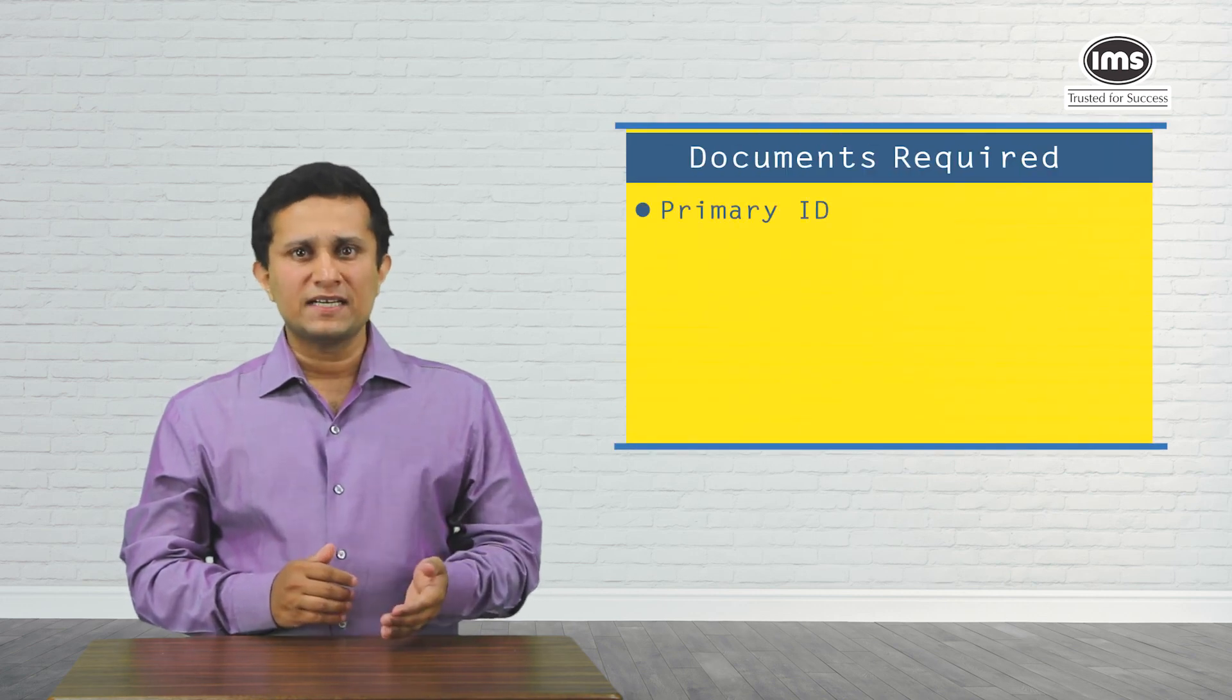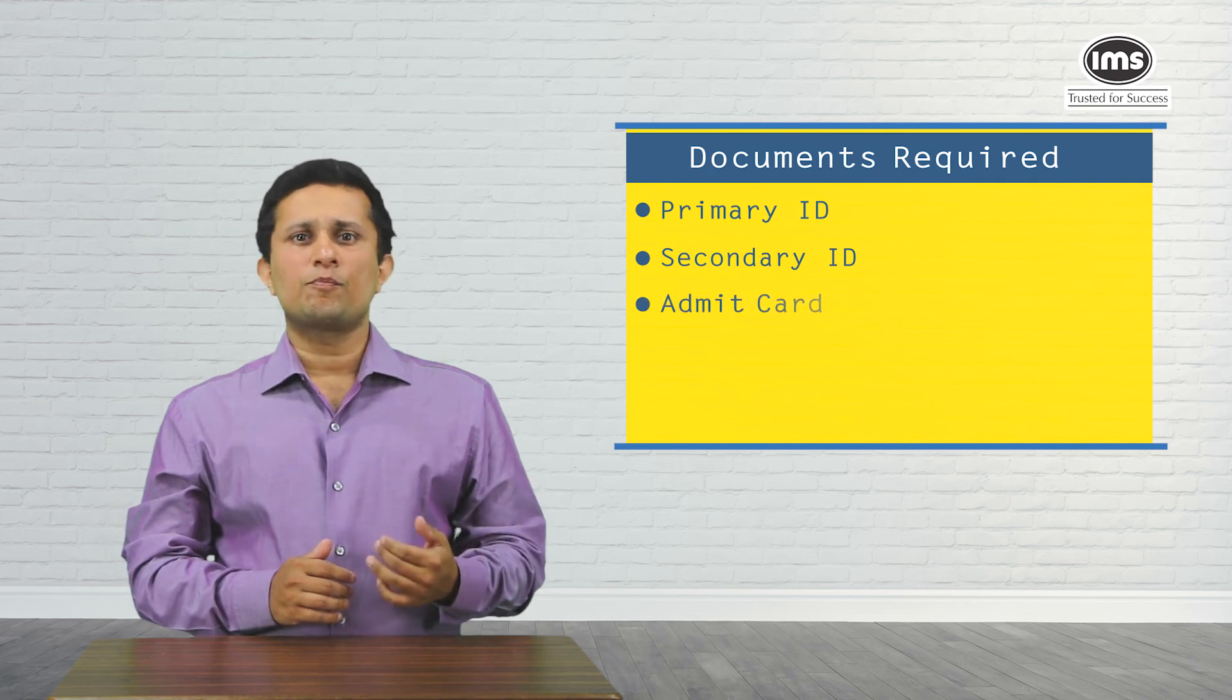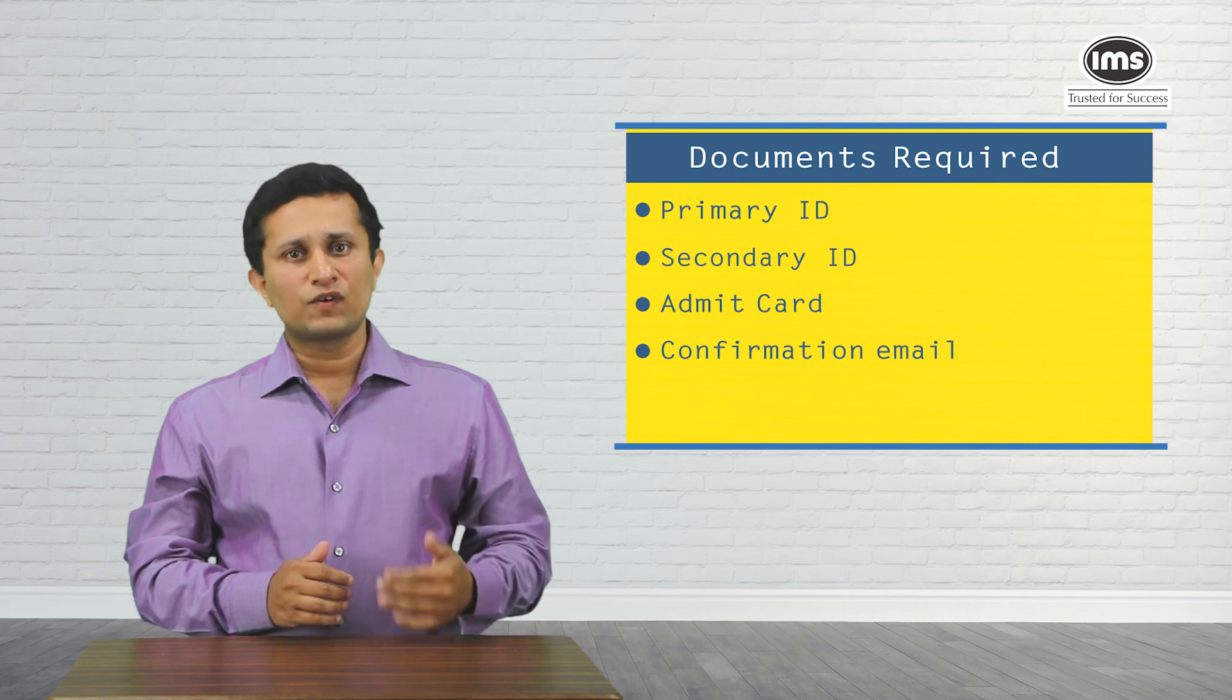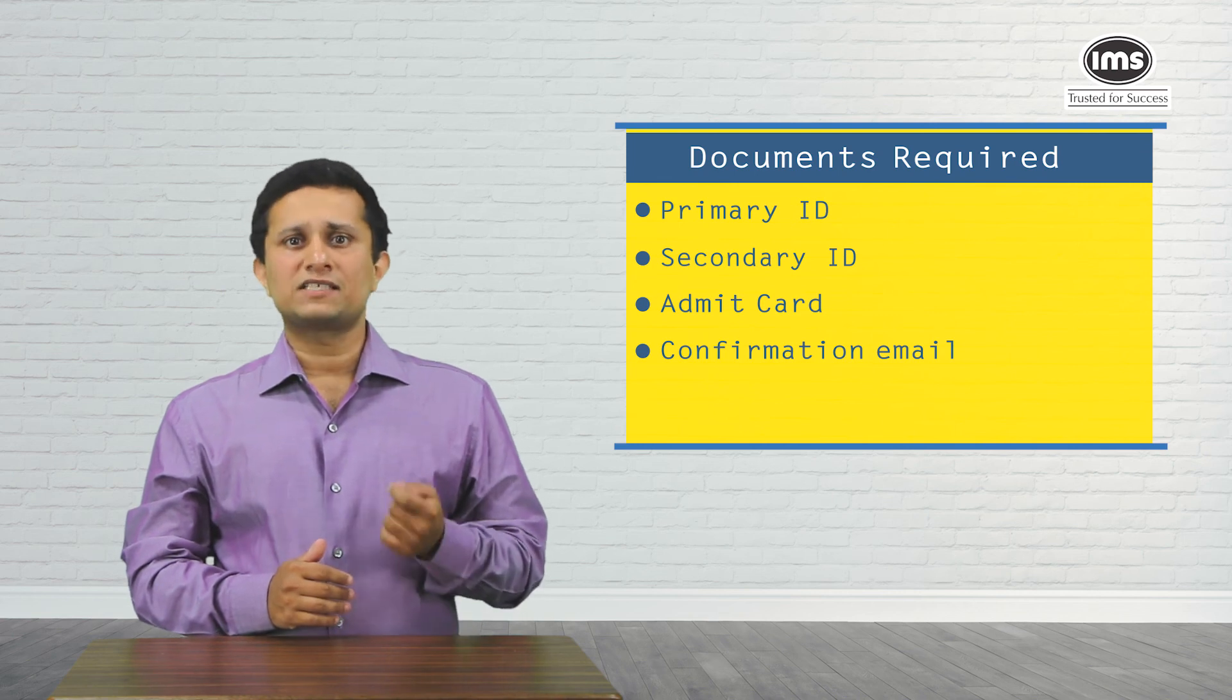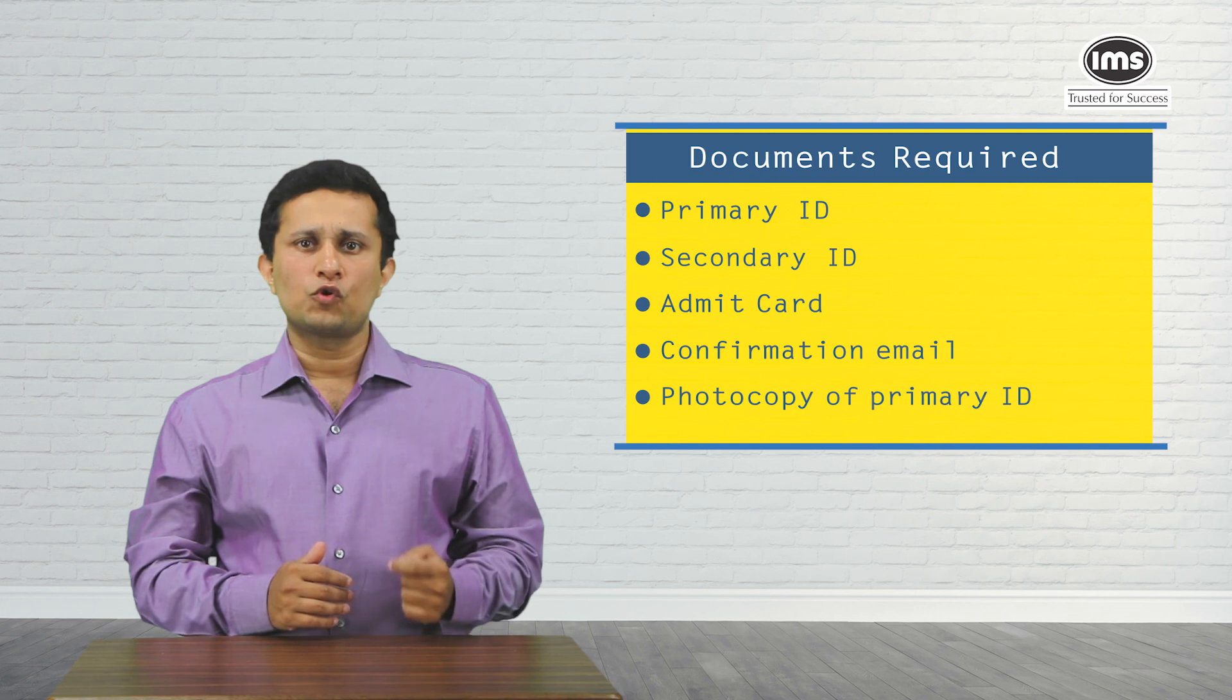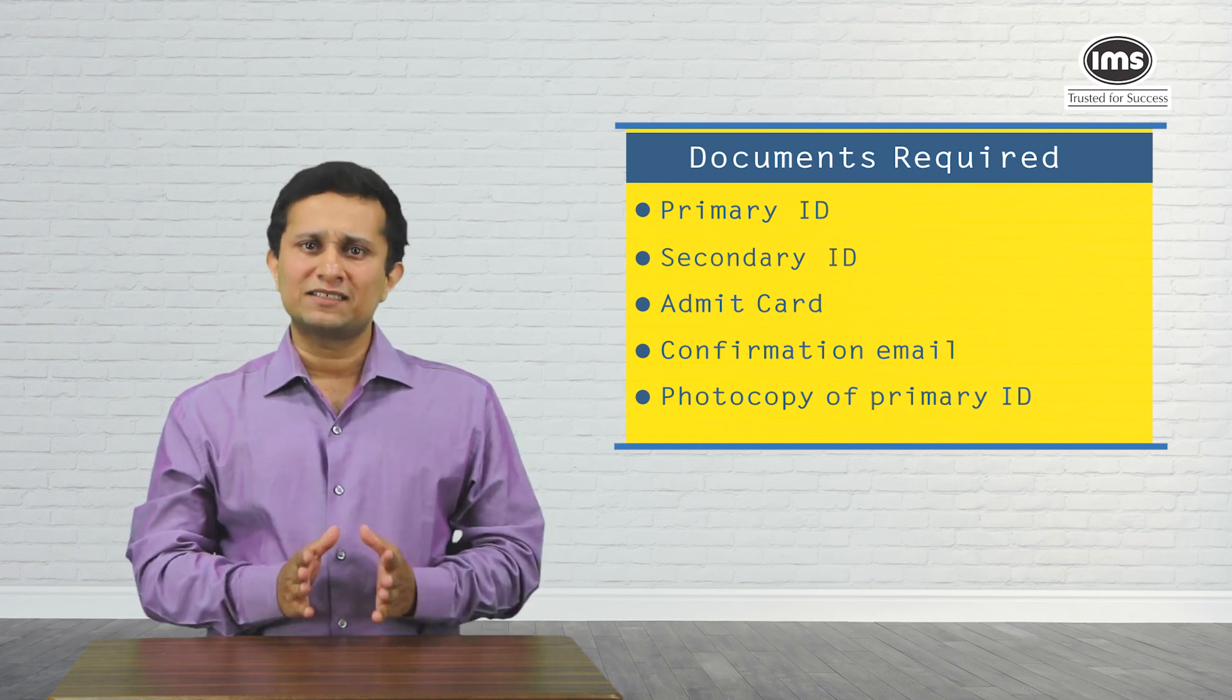For NMAT, you need a set of documents. You need your primary ID, a secondary ID, please carry a copy of your admit card. You also need to have your confirmation email, though this year you can show this confirmation email either on your phone or as a printout. Please also do not forget to carry a photocopy of your primary ID because this is retained by the authorities at the test center.